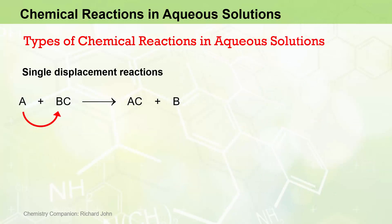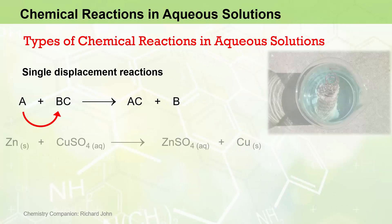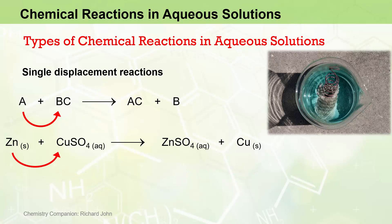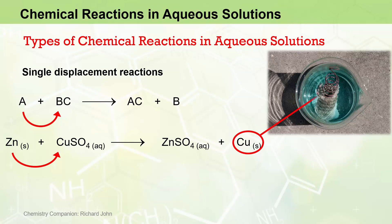Starting with single-displacement reactions, we can show a couple of examples. Here we have elemental zinc reacting with copper sulphate solution to produce an aqueous solution of zinc sulphate and elemental copper. The zinc effectively displaces the copper from the copper sulphate solution, producing zinc sulphate and metallic copper, which deposits onto the surface of the zinc as evidenced by the characteristic copper colour in this image.